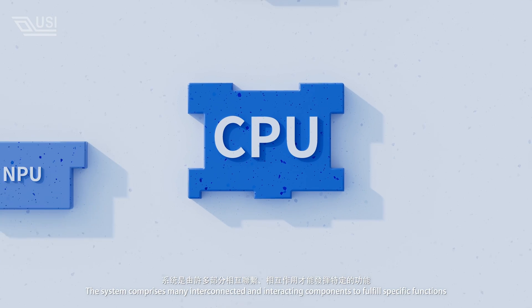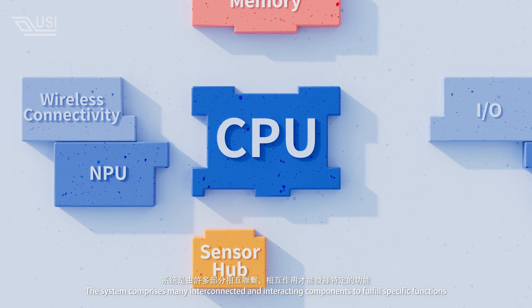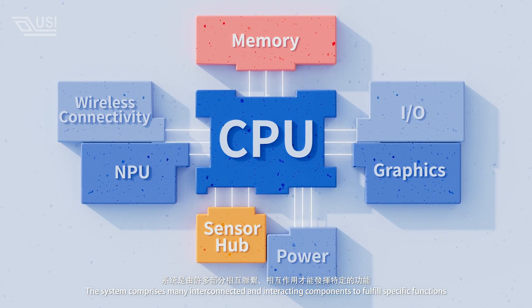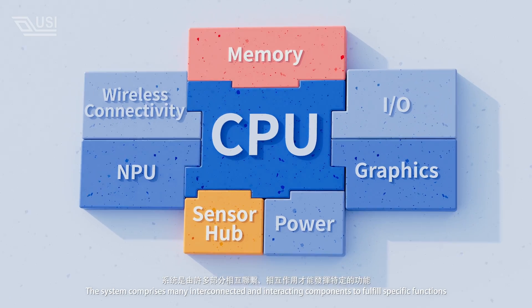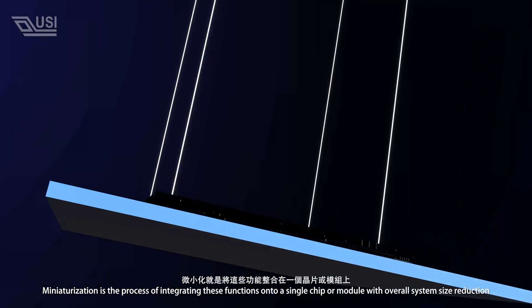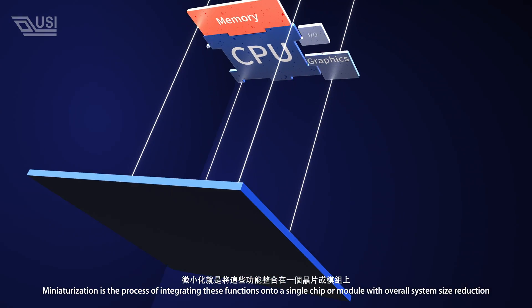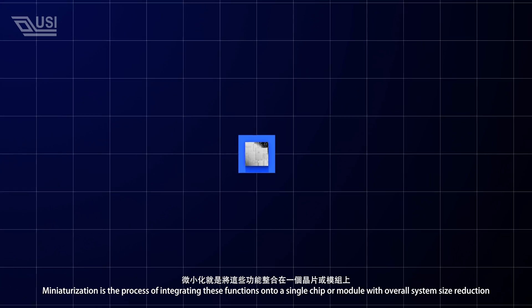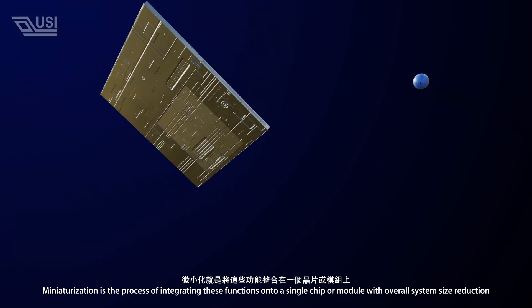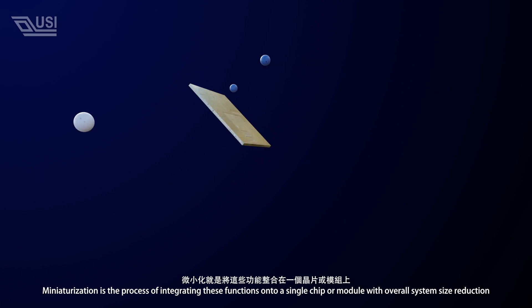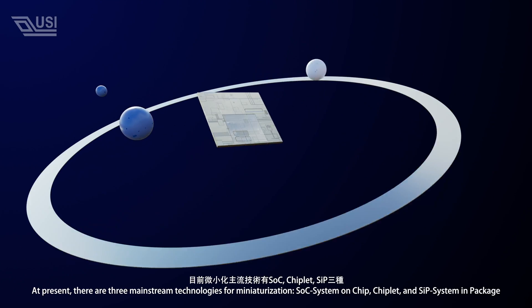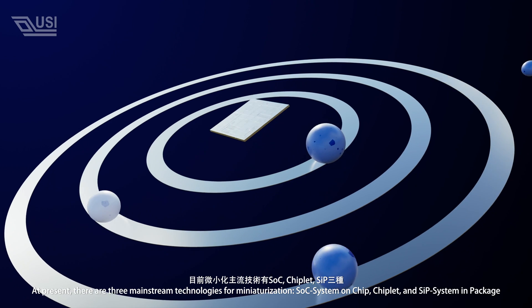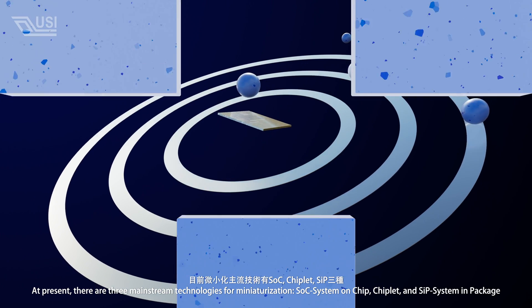The system comprises many interconnected and interacting components to fulfill specific functions. Miniaturization is the process of integrating these functions onto a single chip or module, with overall system size reduction. At present, there are three mainstream technologies for miniaturization.